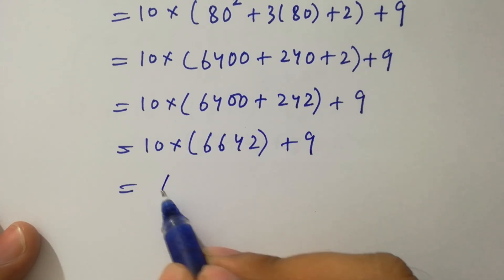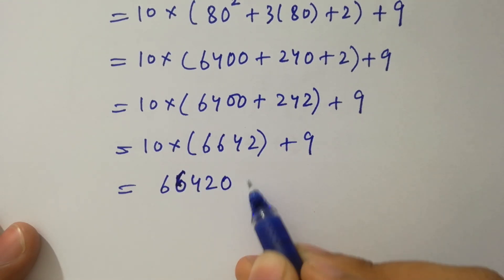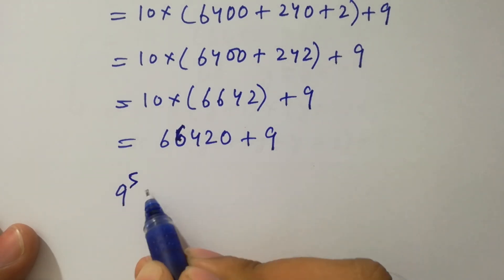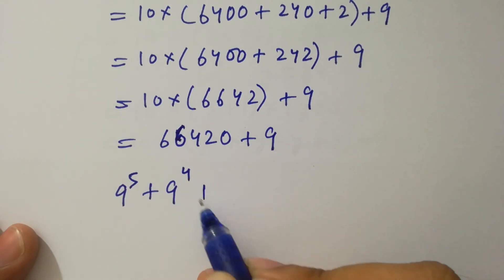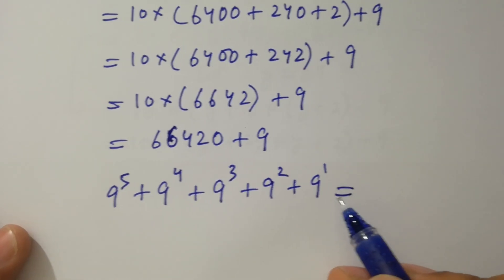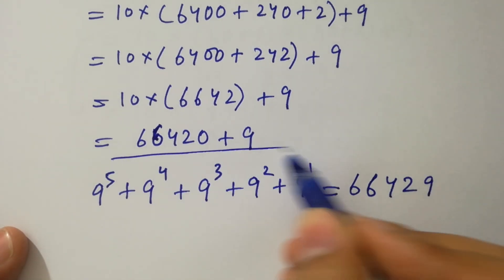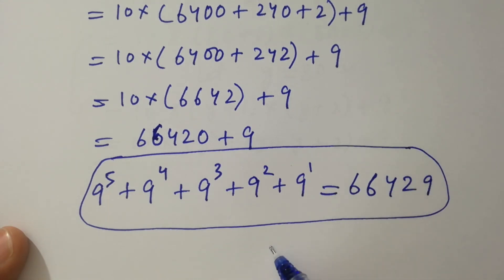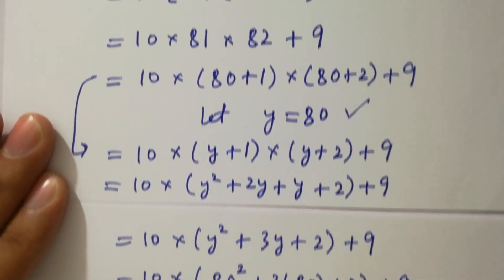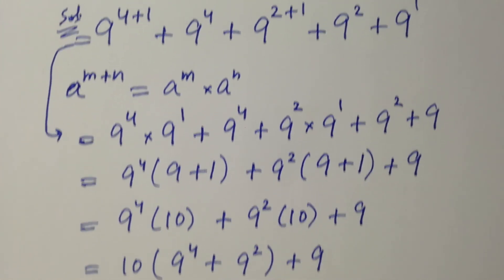10 times 6642 will be 66420, plus 9 as it is. Therefore, 9 to the power 5 plus 9 to the power 4 plus 9 to the power 3 plus 9 squared plus 9 to the power 1 equals 66429, which is our final answer. Thanks for watching this video. Please subscribe to this channel to get notifications of new videos, and don't forget to share these videos with your classmates and friends so that they can also benefit. Okay, bye.